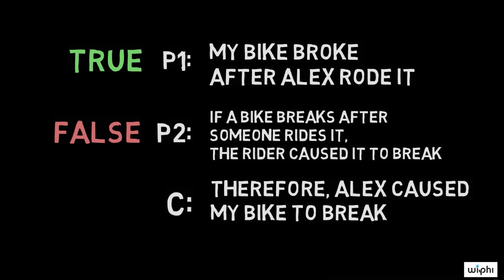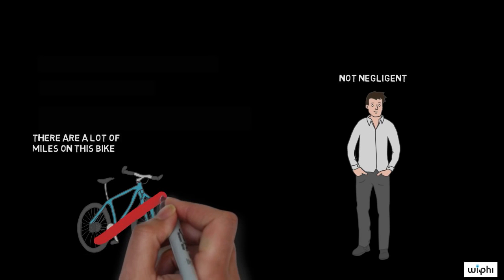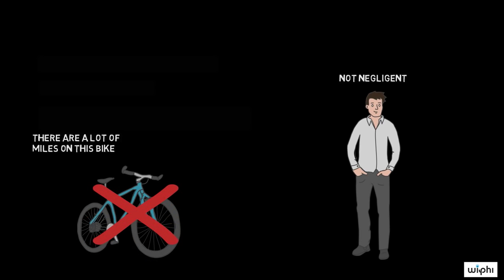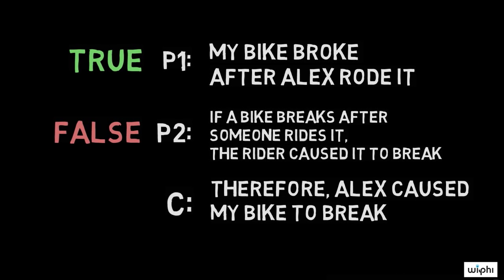Plenty of bikes break without the rider causing it. So, suppose Alex didn't act negligently at all. Like I said earlier, the bike could have been worn out. So, no one acted negligently. It's just natural wear and tear of the bike, and the natural wear and tear caused the bike to break, not Alex. Here, premise 2 is false.